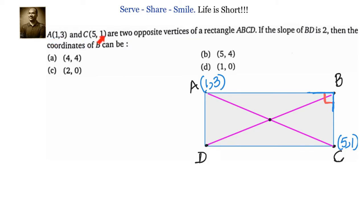A and C are two opposite vertices of a rectangle ABCD. If the slope of BD is 2, then the coordinates of B can be what? We have been given a rectangle ABCD in which A and C are opposite vertices, and the slope of diagonal BD is 2. We have to find out the coordinates of B.